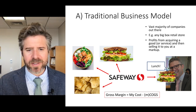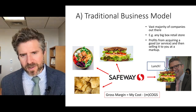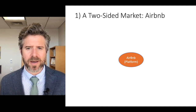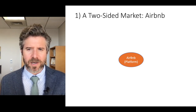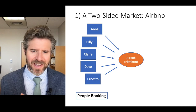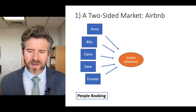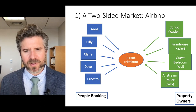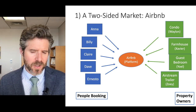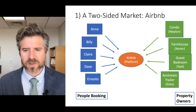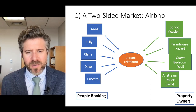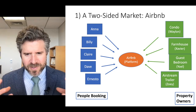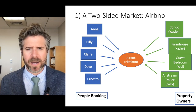Traditional business model — exactly as you were expecting. On the other hand, a very interesting two-sided marketplace model looks a little like Airbnb. On the left-hand side we've got the guests — the people who are booking. On the right-hand side, we've got the hosts, the property owners who are renting out rooms, or guest suites, or farmhouses. And in the middle, Airbnb is making a market — they're traditional market makers facilitating the transaction between buyers and sellers.